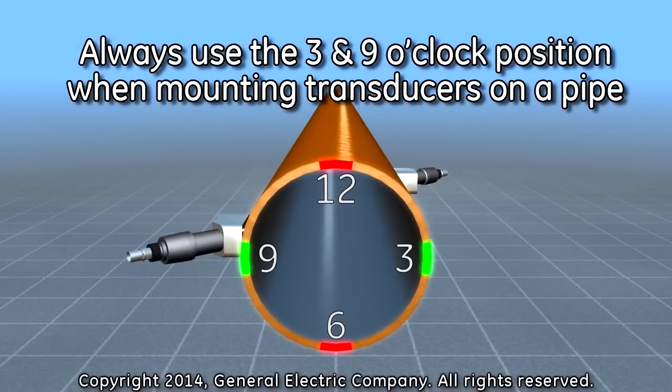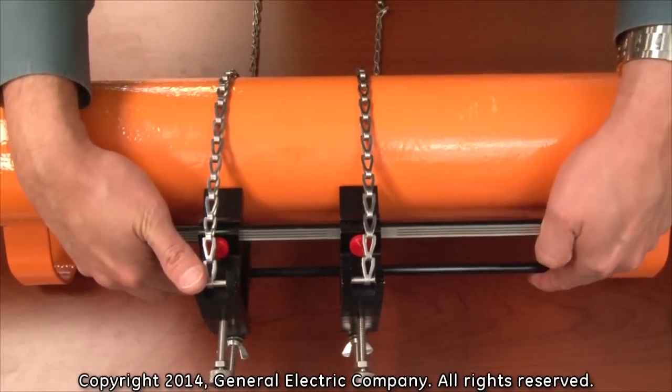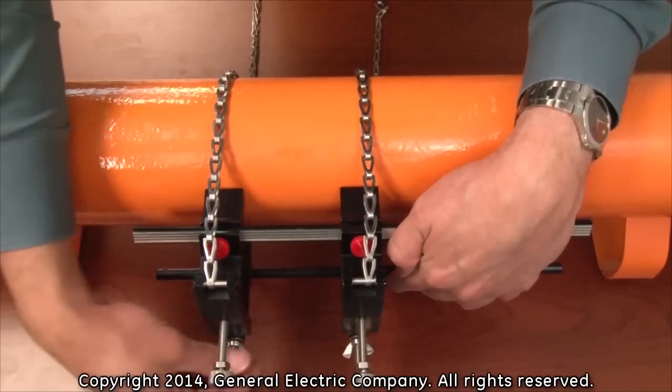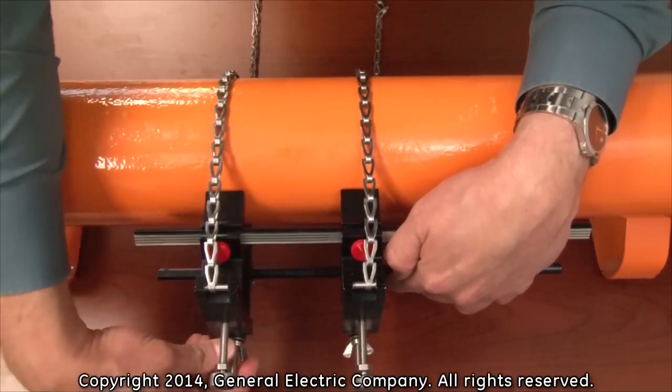Ensure that the clamping fixture is installed at the 3 o'clock or 9 o'clock position on the pipe, never at the 12 o'clock or 6 o'clock position. Tighten the wing nuts until the fixtures are secured firmly to the pipe.